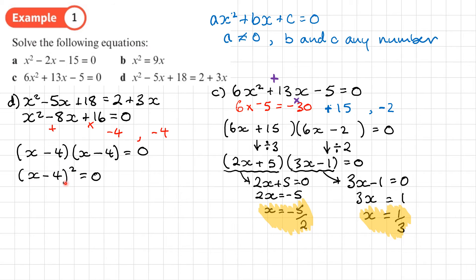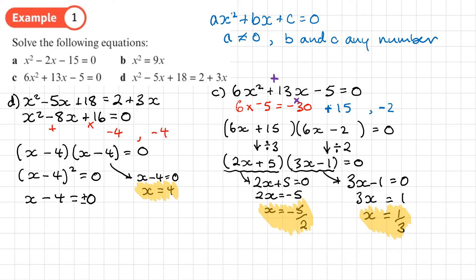When it's in this squared form, we can rearrange and make x the subject directly. From (x − 4) squared equals 0, we get x minus 4 equals 0, so x equals 4. Or if we square root both sides, x minus 4 equals plus or minus the square root of 0, which is still 0, then add 4 to get x equals 4. Either way we get the same solution: x equals 4.